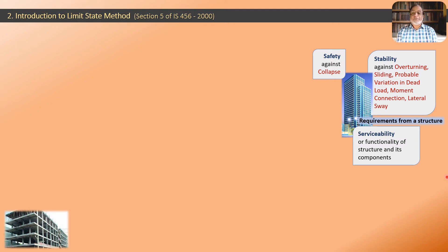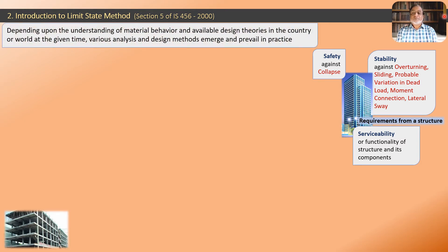These three requirements come in proper order: stability comes first, safety against collapse comes second, and serviceability comes third. Unless all three requirements are satisfied, we cannot call the design and construction of the structure proper or complete. Coincidentally, all three words start with S — stability, safety, and serviceability — three S's.